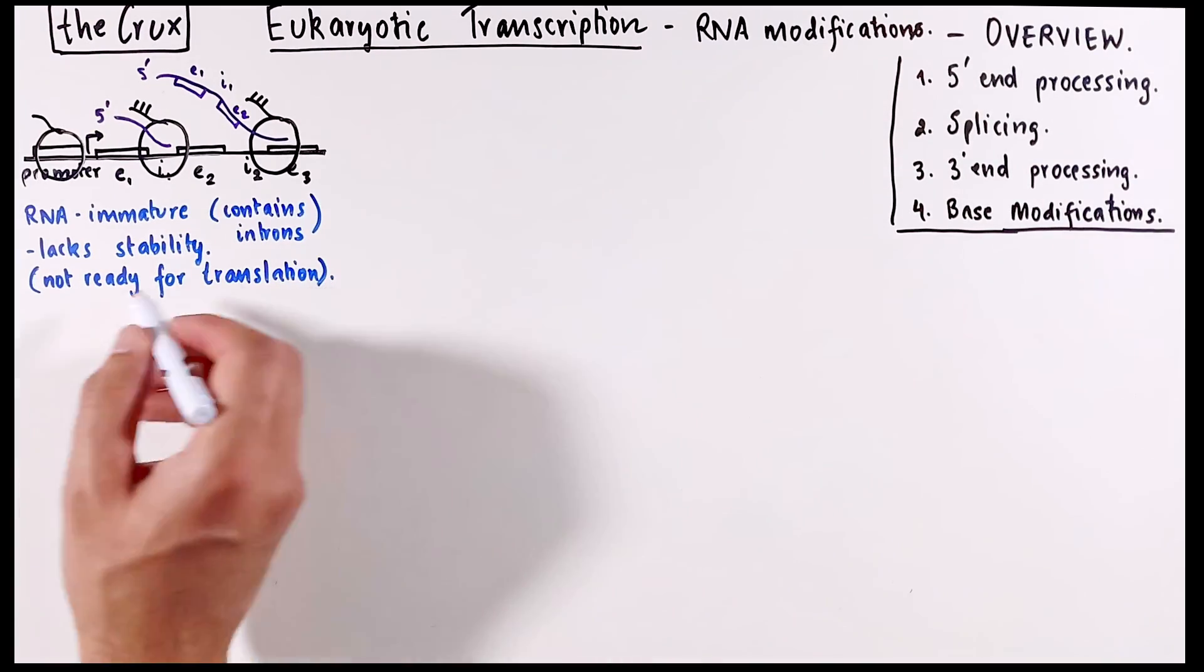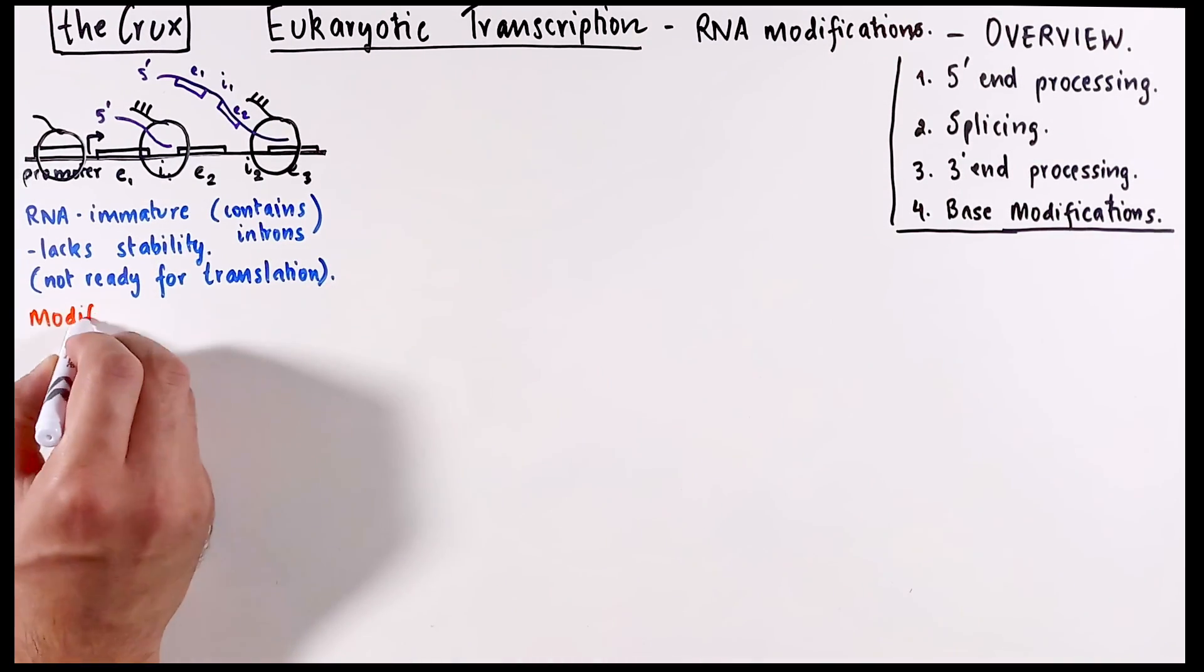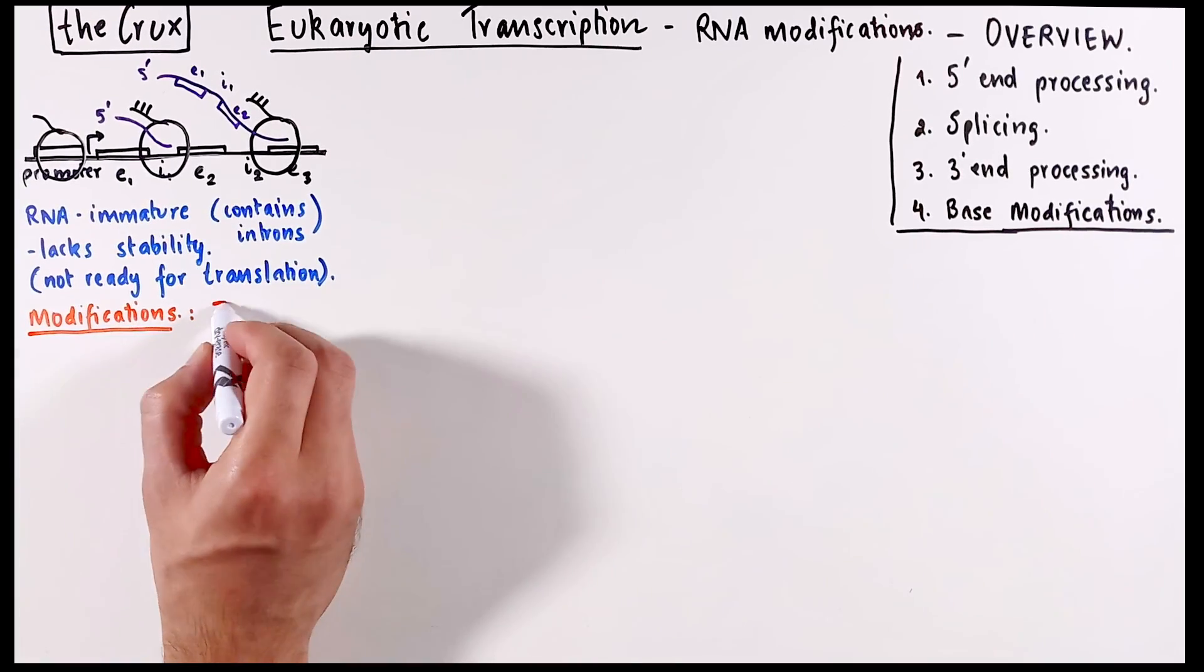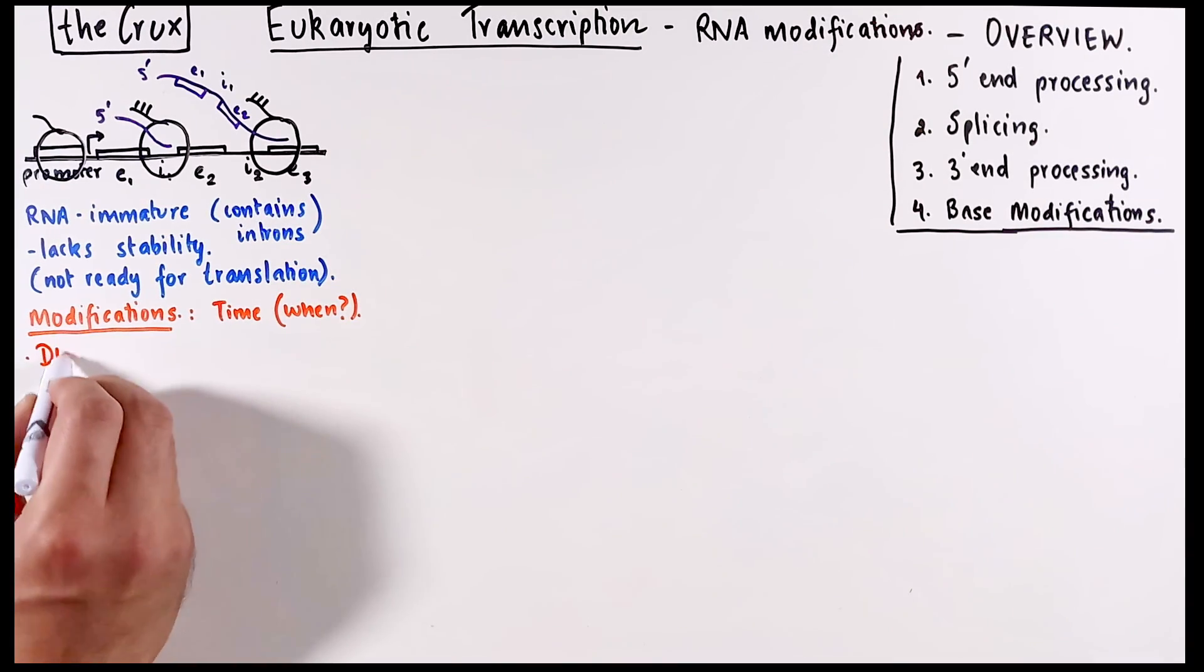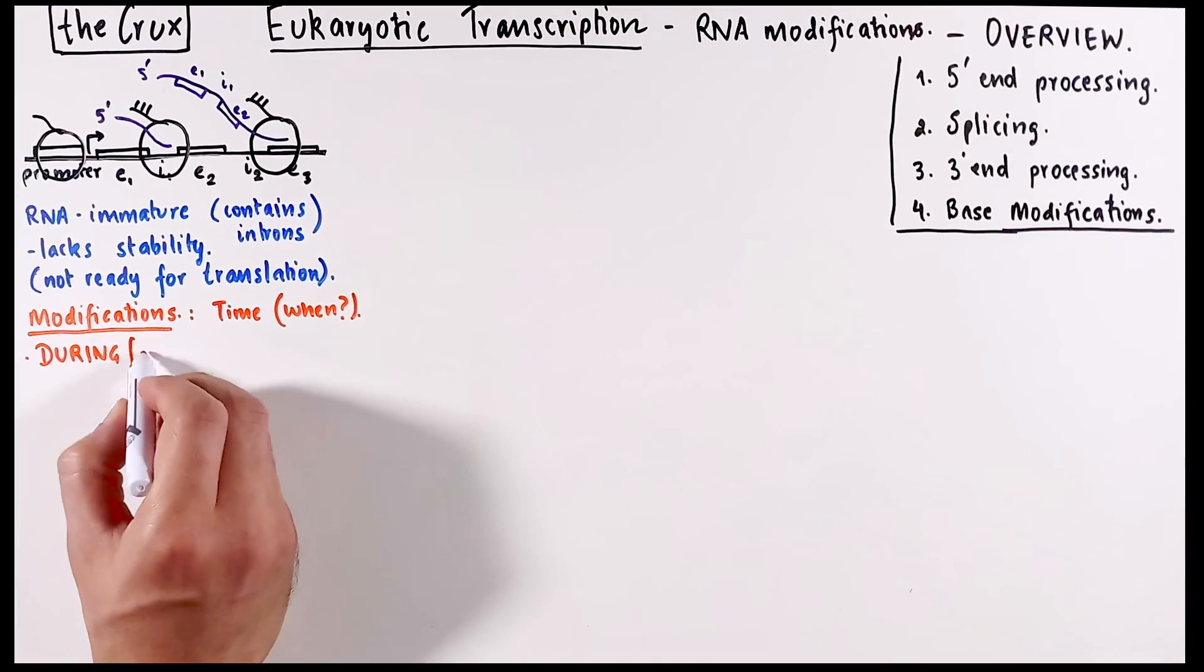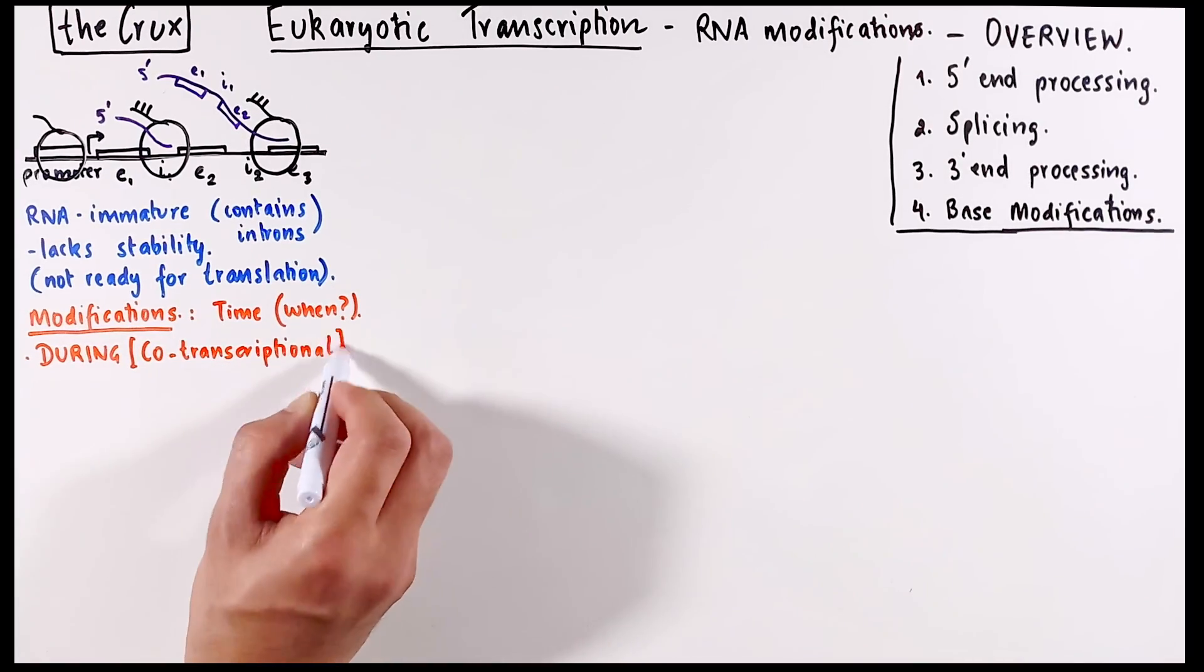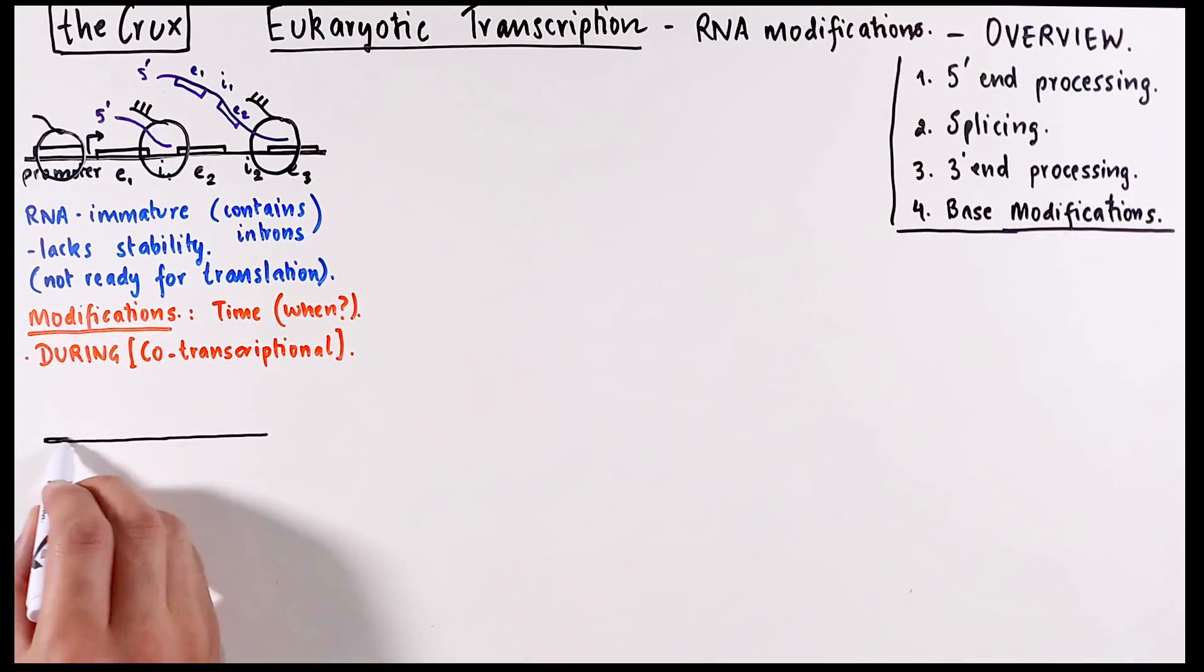Now, based on when they happen, that is the time, you can group the type of modifications into two types. The modifications that happen during the polymerase movement and when the RNA is being made is called co-transcriptional modification. For instance, the process of removing introns, known as splicing, can begin on the RNA while it is still in the elongation phase.